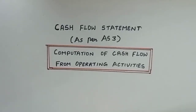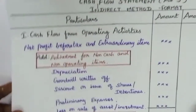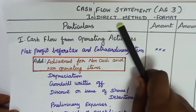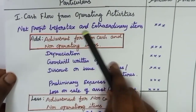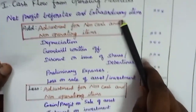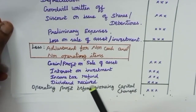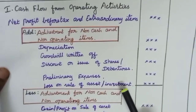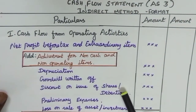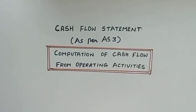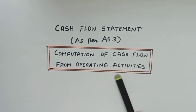Welcome to my channel. We have already discussed what is cash flow statement, the format of indirect method of preparing cash flow statement, how to determine net profit before tax and extraordinary items, and how to determine operating profit before working capital changes. Link for the previous videos is given in the description box, please check it. Today we are going to discuss how to determine cash flow from operating activities.